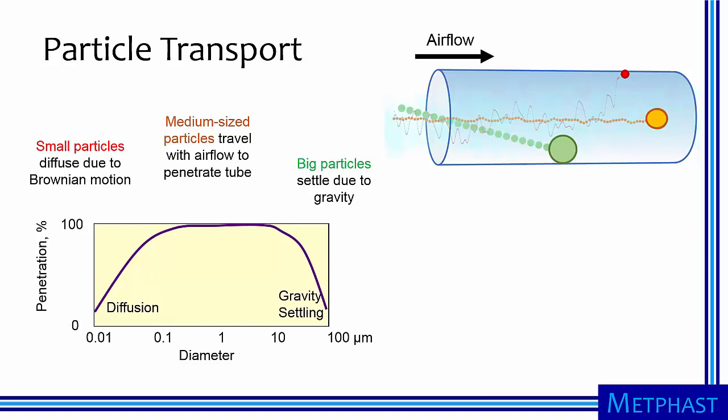Once particles are aspirated, they need to be transported to the filter or sensor effectively. We have previously talked about particle transport through tubes when we discussed aerosol behavior. Transport through something is characterized by penetration, which is one minus the collection efficiency.